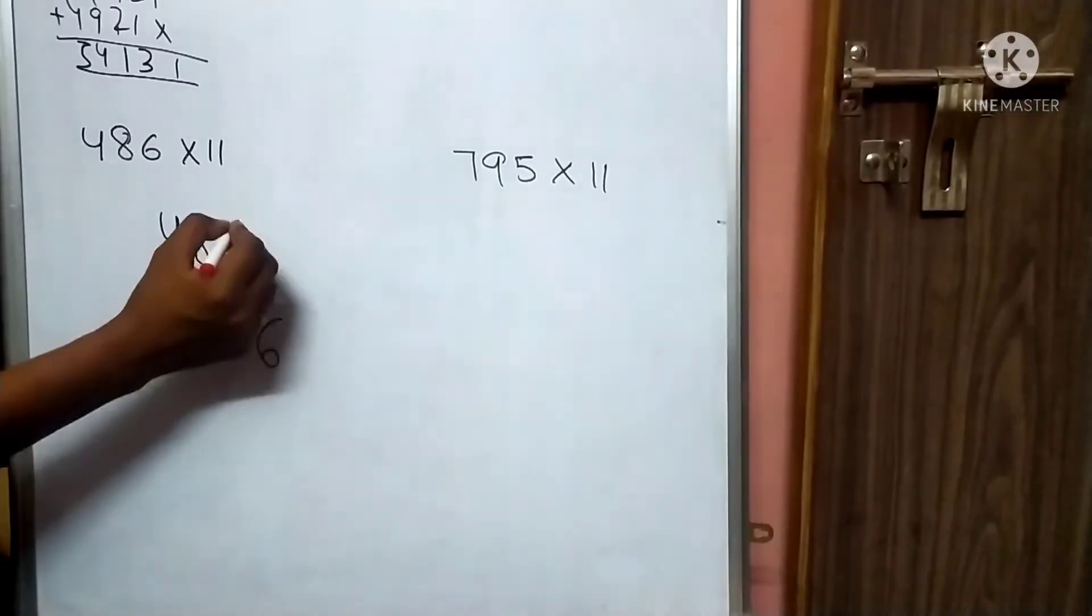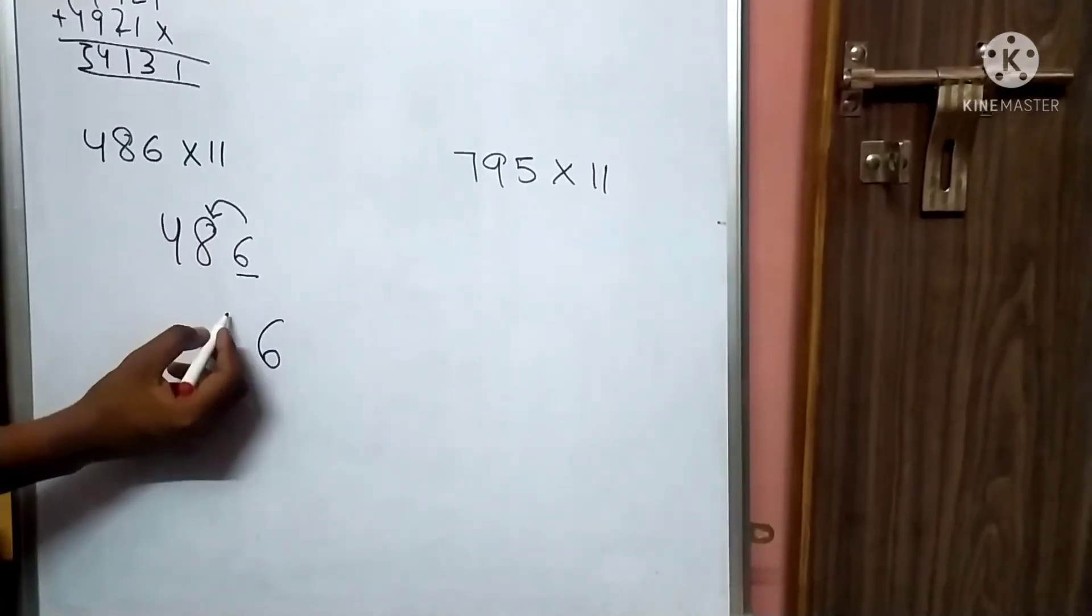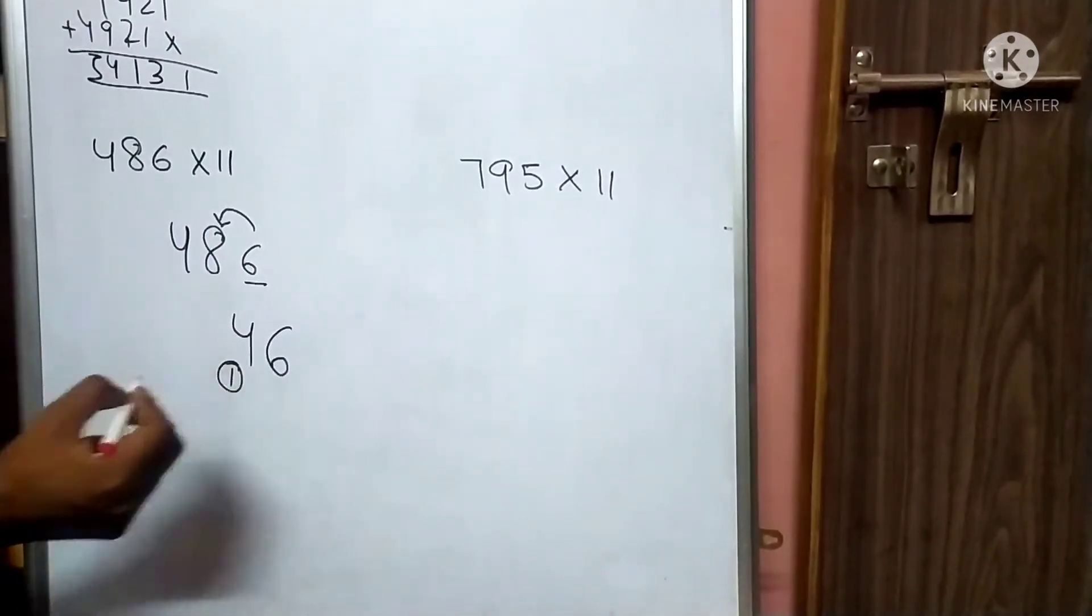6 plus 8 equals 14. 4 and 1 carry. Tens place plus hundreds place. 8 plus 4 plus 1 carry equals 13.